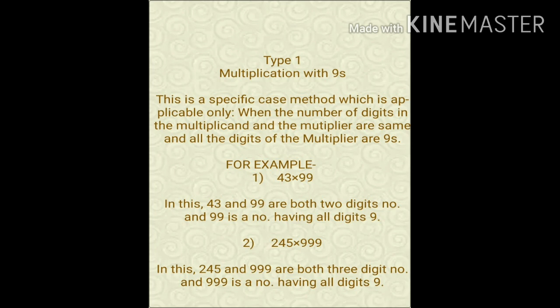Let's take an example: 43 into 99. In this, 43 and 99 are both 2-digit numbers, and 99 is a number having all digits 9. The second example is 245 into 999. In this, 245 and 999 are both 3-digit numbers, and 999 is a number having all digits 9.